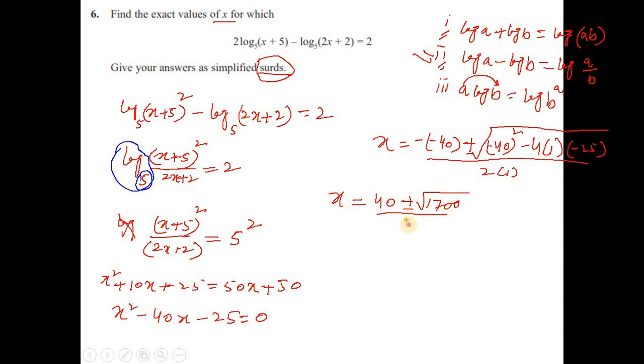This 1700 you can write as [40 ± √1700] / 2. And 1700 can be written as 100 × 17, and 100 can come out from the root as 10.